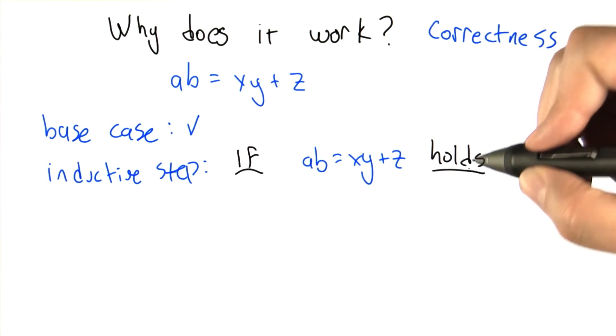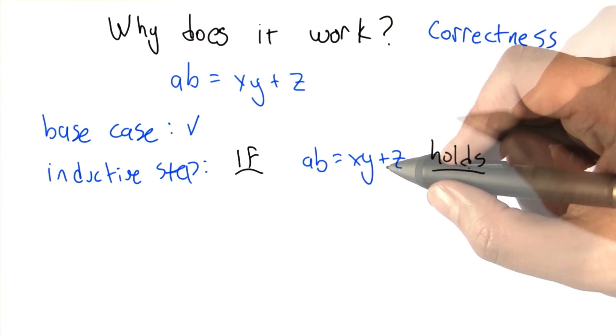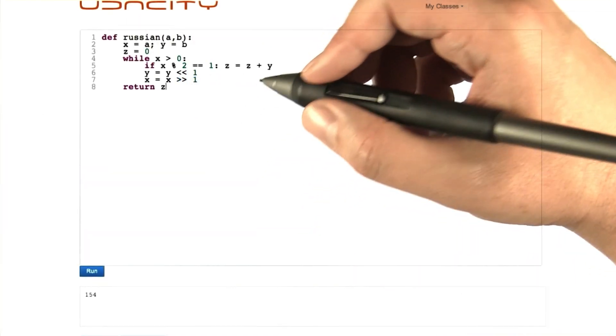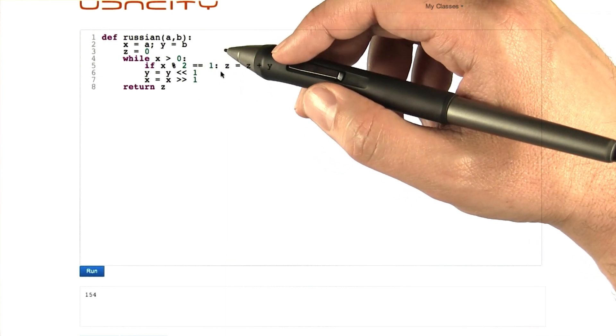And now we need to show that if this condition holds at the beginning of the top of a while loop, then it's going to hold at the end with the new values of x, y, and z. So let's remind ourselves how x, y, and z change in the while loop so we can see whether the condition still holds.